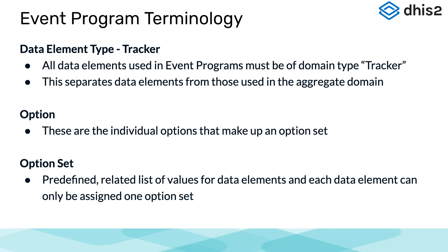Options are the tracker model's version of the aggregate model's category options. These options make up an option set, which is a group of options — the tracker model's version of categories. These option sets are assigned to data elements, and when the data elements are viewed in the capture app, the options appear as a drop-down list to select from. You would have some familiarity with option sets as you have seen them in action during data entry and data analysis exercises.